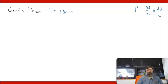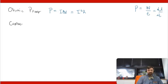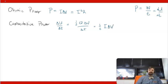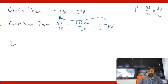Ohmic power is given by I times Delta V — current times voltage — and we typically put it in terms of something else, like I squared R or Delta V squared over R. For a capacitor, the capacitive power is essentially Delta U over Delta T, and since U equals one-half Q Delta V, this ends up looking like one-half of I Delta V. In other words, the power delivered via the capacitor looks like half of the ohmic power.